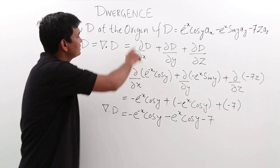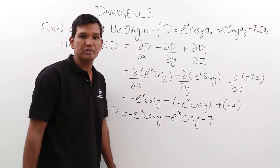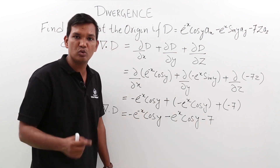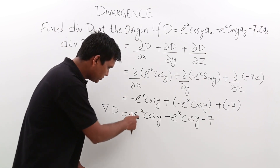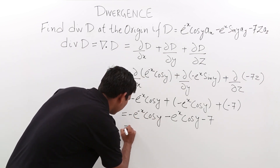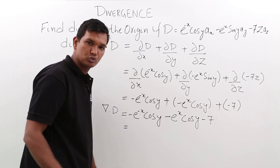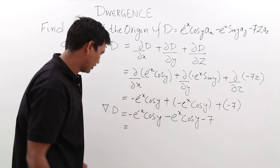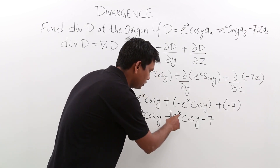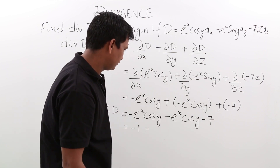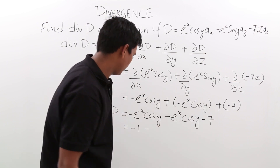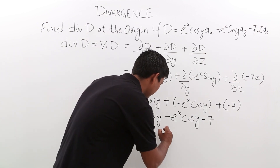Now we have to find this divergence at the origin. At the origin, the coordinates are x equals 0, y equals 0, and z equals 0. Substituting these values: cos 0 is 1 and e to the power 0 is 1, so the first term comes out to be minus 1. Similarly, e to the power 0 is 1 and cos 0 is 1, so the second term also comes out to be minus 1. The third term is minus 7.